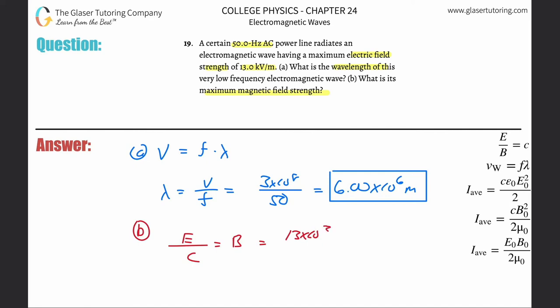The speed of light is going to be 3 times 10 to the 8th. So simply just plug and chug: 13 times 10 to the 3 divided by 3 times 10 to the 8 equals 4.33 times 10 to the negative 5th.